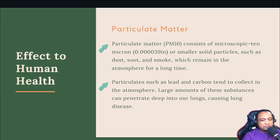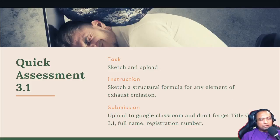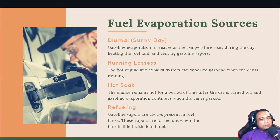All five elements in the emission are harmful to human health. For Quick Assignment 3.1, you need to sketch and upload to Google Classroom a structural formula for any element in the exhaust emission — for example, hydrocarbon, carbon monoxide, or nitrogen oxide. You can simply Google it, draw a simple structural formula, and then upload to Google Classroom.